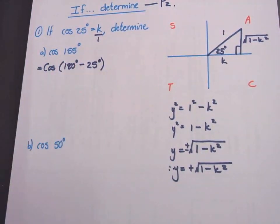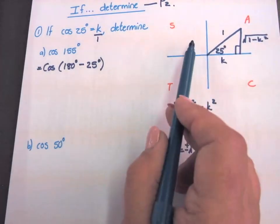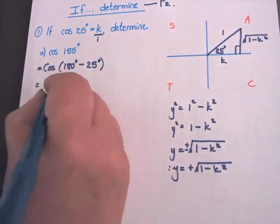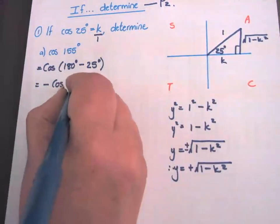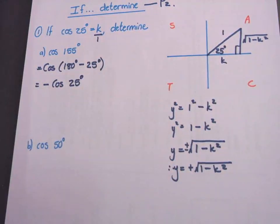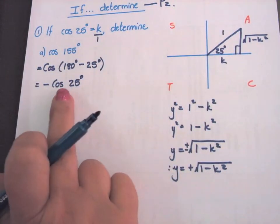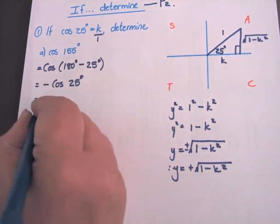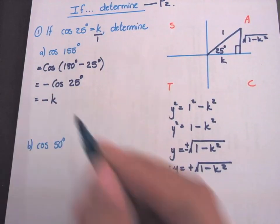Now I have to determine the sign of cos in the second quadrant. What will it be? Negative. It will be a negative cos 25 degrees. And I already know what cos 25 is. It is K. Therefore, this answer will be negative K.